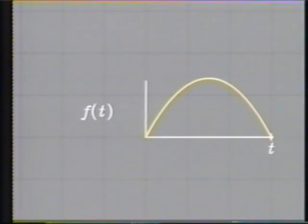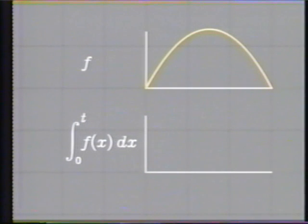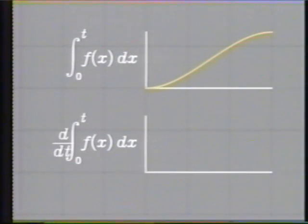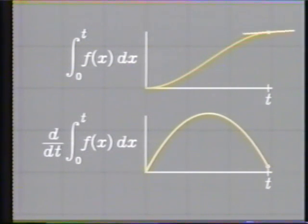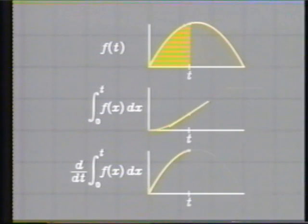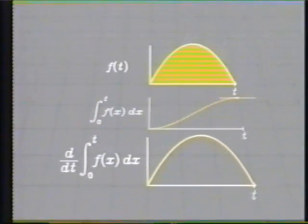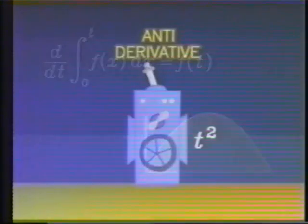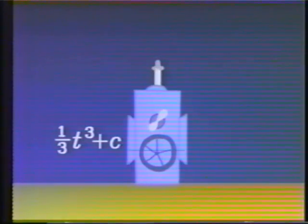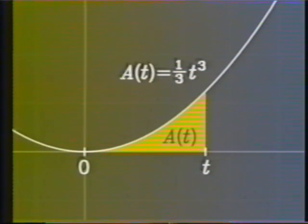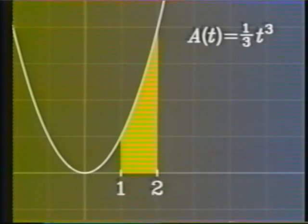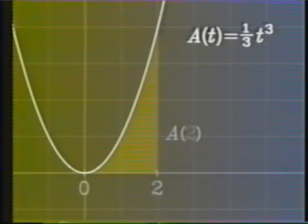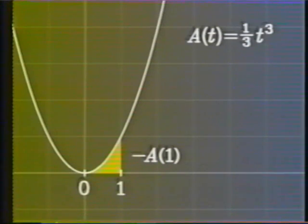Area under the curve: f of x is equal to the antiderivative of f of x dx. It is fundamental geometry and analysis. Integral from a to b — take the antiderivative, evaluate at b, subtract the value at a.